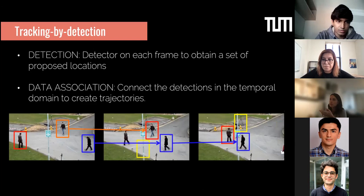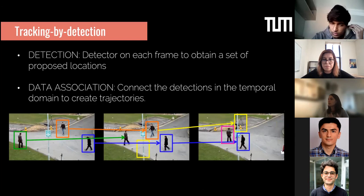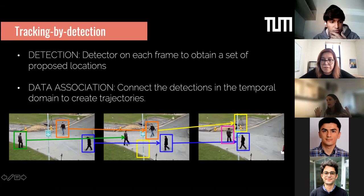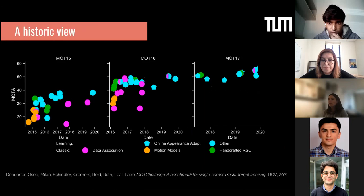The second part is data association — taking those bounding box proposals and trying to recover trajectories by connecting detections in the temporal domain. Things get harder when you don't have a bounding box, as in the case of the green trajectory that tries to match something but finds no evidence of a pedestrian in the next frame and therefore cuts the trajectory. This shows how detection problems carry over directly into tracking.